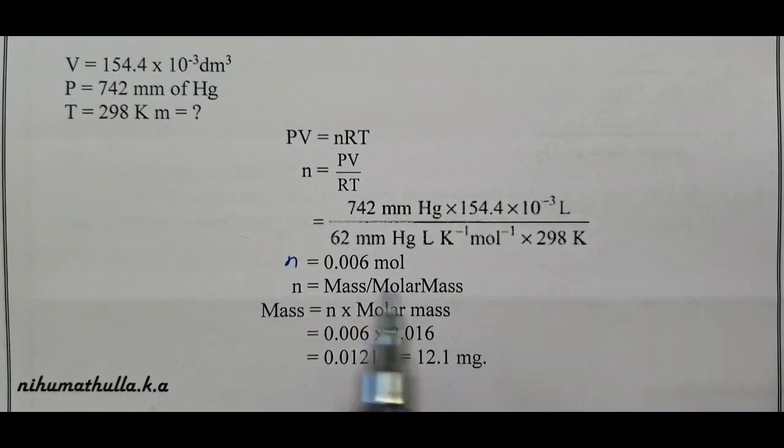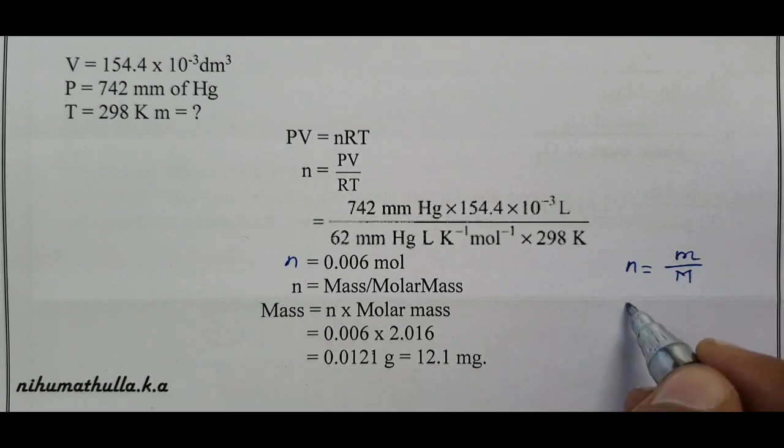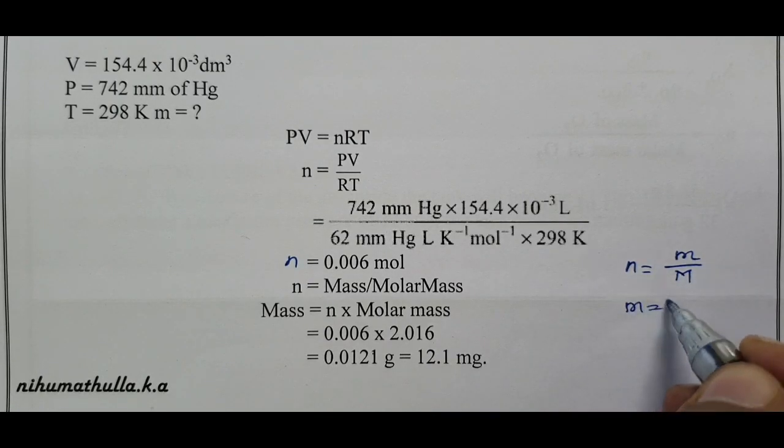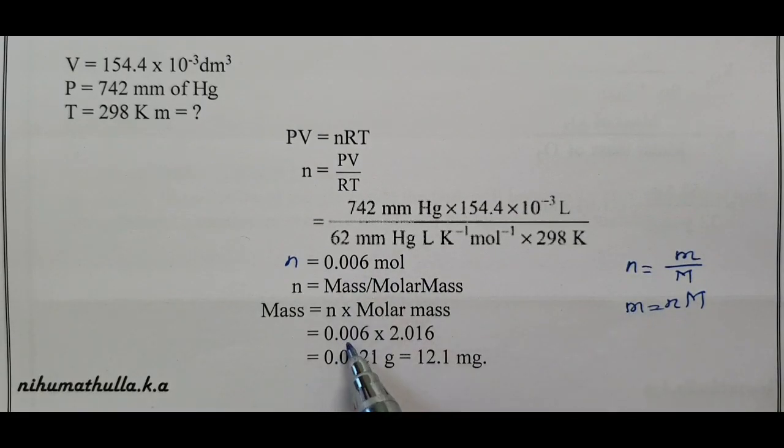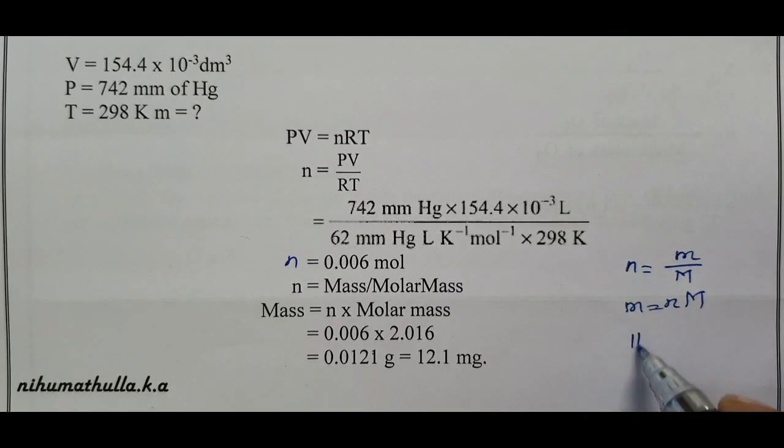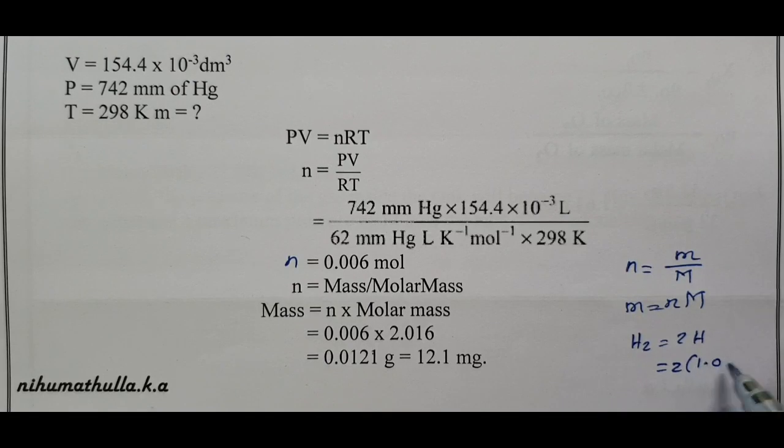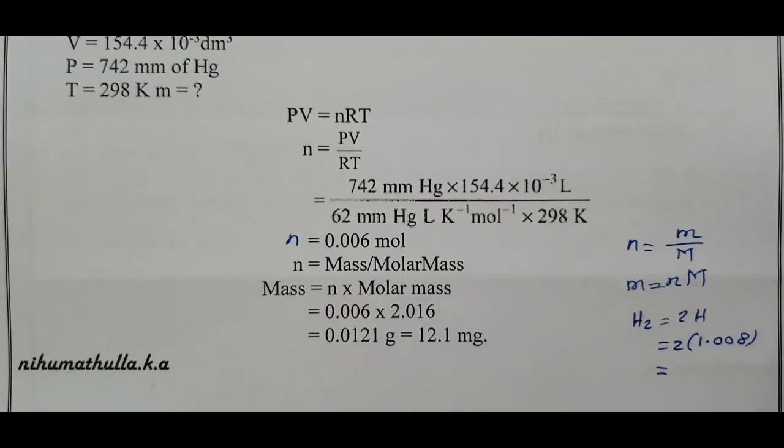Number of moles formula is mass by molar mass. Mass equals number of moles into molar mass. Number of moles calculated is 0.006 into molar mass. Hydrogen in gaseous state is H2, so 2 into hydrogen atomic mass 1.008, which equals 2.016.